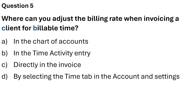Question 5: Where can you adjust the billing rate when invoicing a client's billable time? Options include: in the chart of accounts, in the time activity entry, in the invoice by selecting the time tab, or in the accounting settings. The correct answer is Option B — in the time activity entry — and Option C — directly in the invoice.